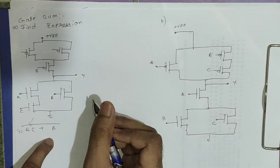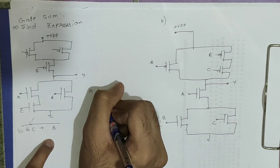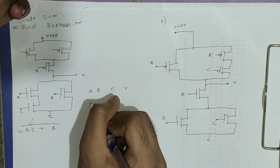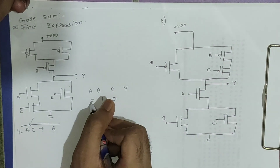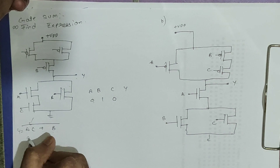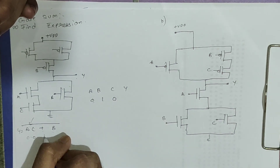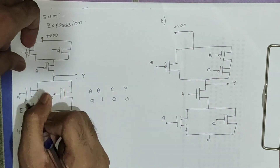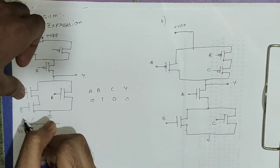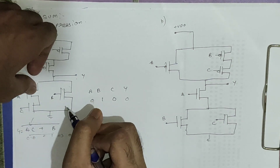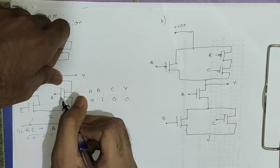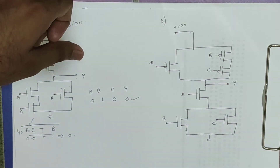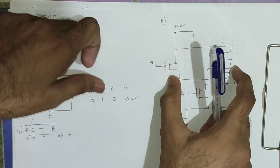To verify, let's say A=0, B=1, C=0. Substituting: 0·0 + 1 complement = 0, so Y=0. Verifying from the circuit: A=0 and C=0 so both are disconnected, but B=1 so that NMOS is connected and output is connected to ground, giving output 0. The combination is verified.